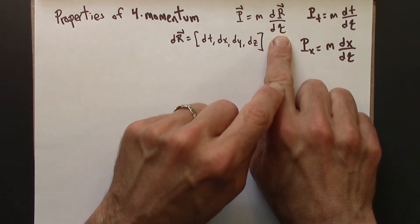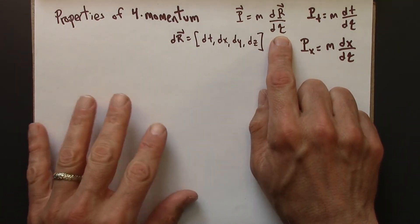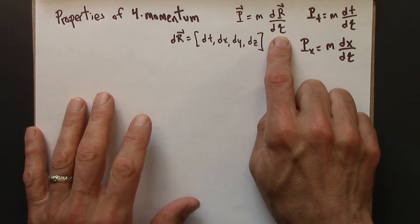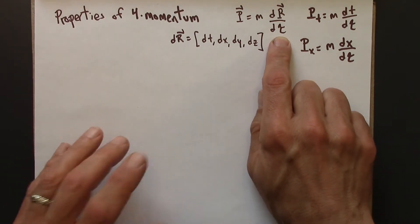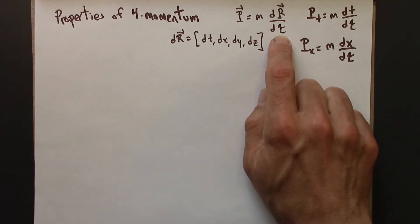Tau, the proper time, does not depend on the frame that you're in. It's a property of the object that's moving itself. It's its own time. It's its own lived experience.